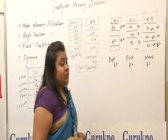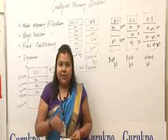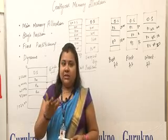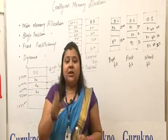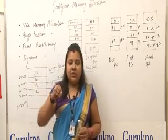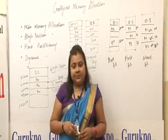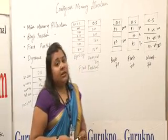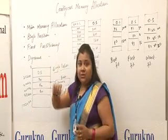Contiguous memory allocation means allocating memory continuously, because memory has holes which are considered to be free spaces from where the data is to be stored. The first scheme used in contiguous memory allocation is main memory allocation.